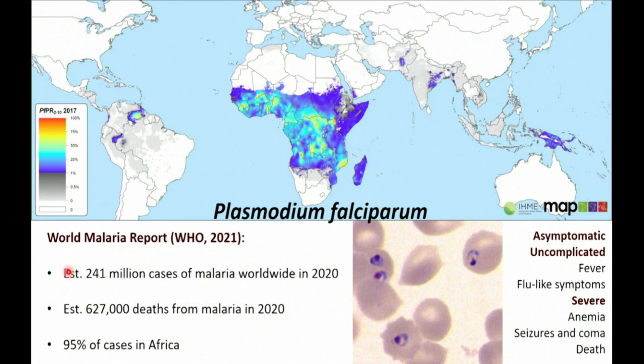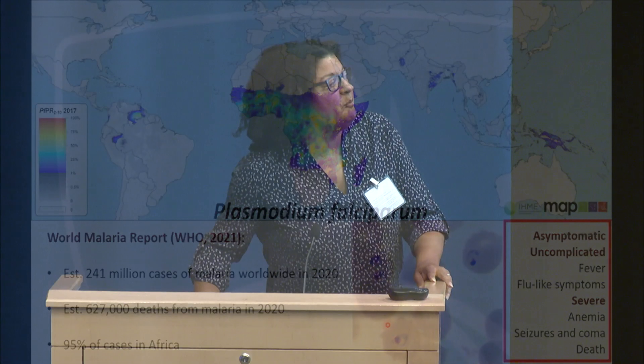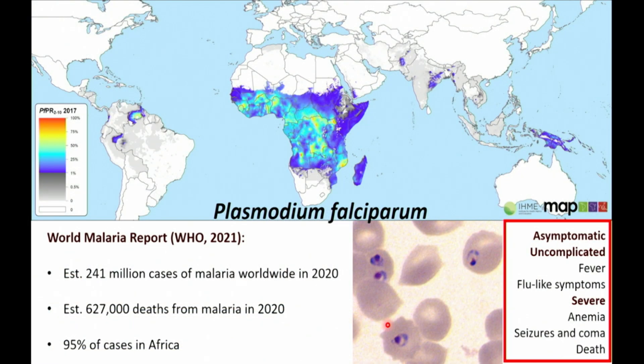I won't get into a lot of detail about falciparum itself — this audience is familiar with the disease — but the point I wanted to make is that the same parasite, Plasmodium falciparum, can manifest in many different ways: everything from a completely asymptomatic infection where people have no symptoms, to uncomplicated disease with fever and flu-like symptoms, all the way to severe malarial anemia, seizures and coma, and unfortunately death. My lab has been really interested in trying to understand some of the factors happening in the host during disease that might impact disease severity.